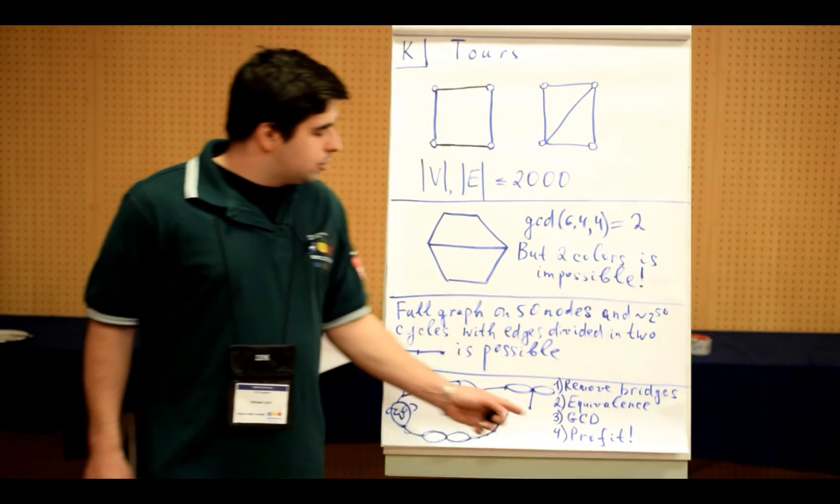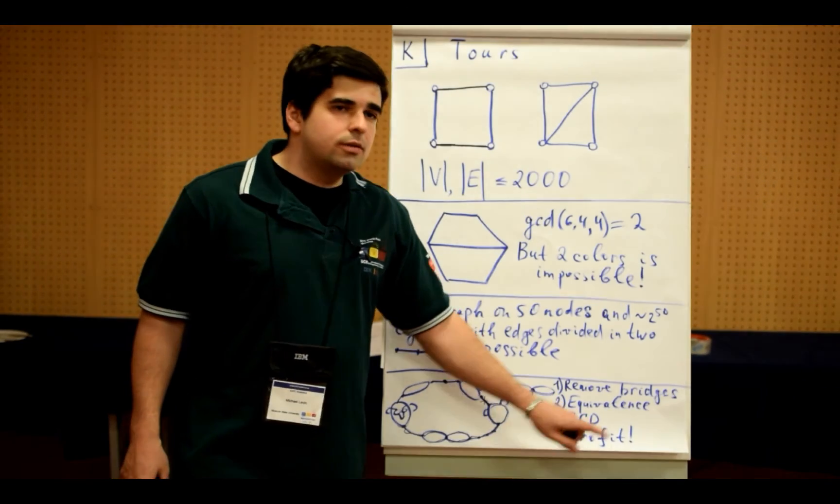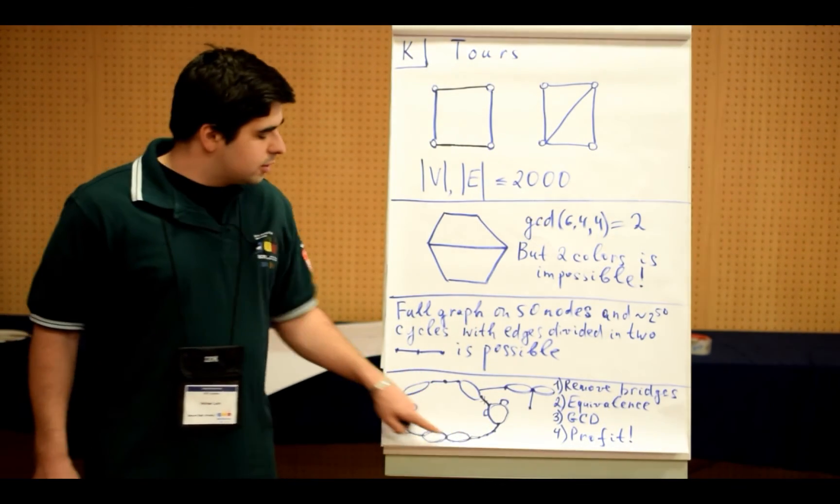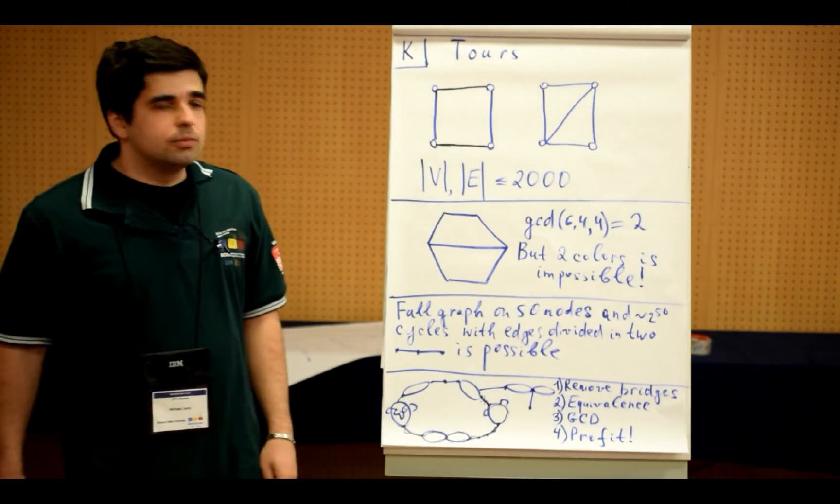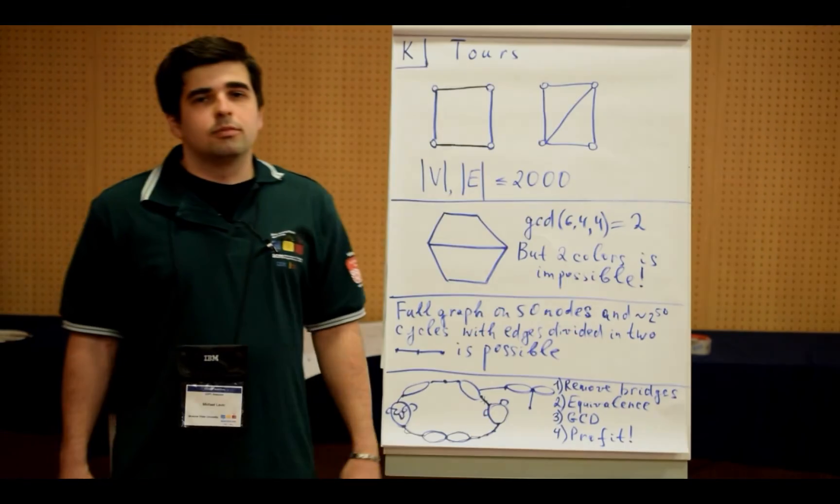So basically, what we need to do is to compute the greatest common divisor of all the sizes of equivalence classes, and then output all divisors of this number, and then we get the profits. Thanks.